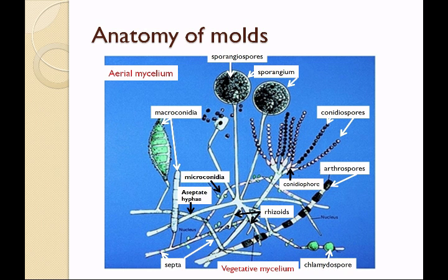We identify fungi based upon their spores. If the spores are contained in a sac, they are called sporangiospores. The sac is called a sporangium. If the spores are loose, they are called conidiospores. Conidiospores are born from a fruiting body called a conidiophore. Sometimes these conidia are very large or very small. The small ones we call microconidia, and the large ones we call macroconidia.